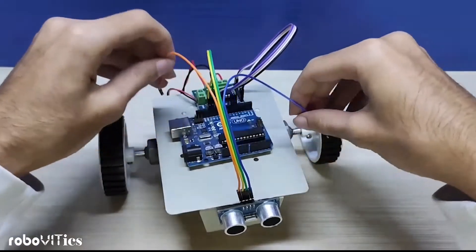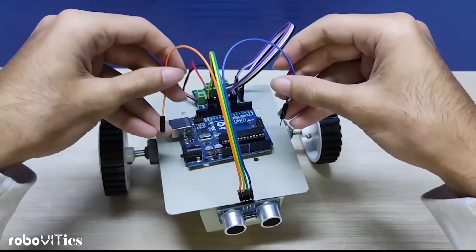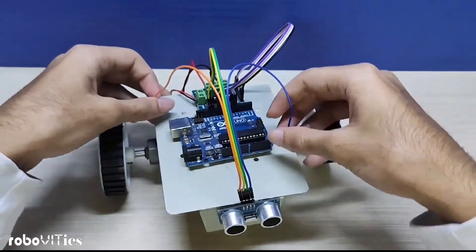The next two wires that are left are going to be pushed into the VCC and ground of the Arduino board.